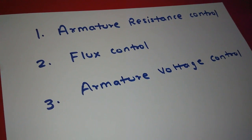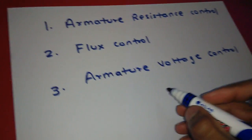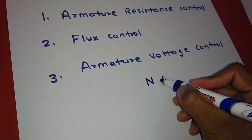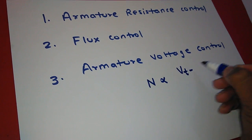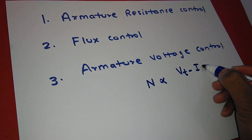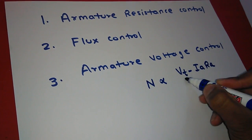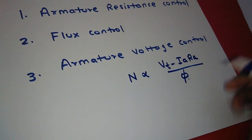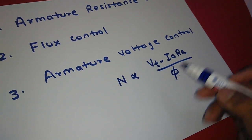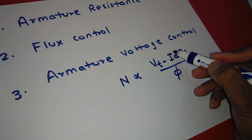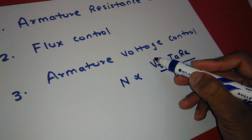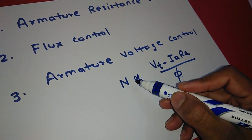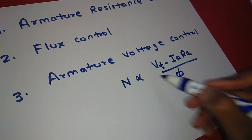We know that the speed equation of DC motor is N is proportional to Vt minus Ia Ra upon Kφ. So from this equation, by changing the armature current, by changing the supply voltage, and changing the flux, we can control the speed of motor.